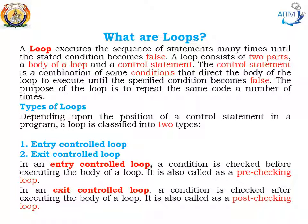In an exit control loop, the statements to be executed are written first and the condition to be verified is written later. Initially, at least once, the statement written inside the loop gets executed first and then the condition is checked. If the condition is satisfied, the statements inside the loop keep on executing. Whenever the condition is checked first and then the statement is executed, such a loop is called an entry control loop. In an exit control loop, the condition is checked after executing the body of the loop. It is also called a post-checking loop.